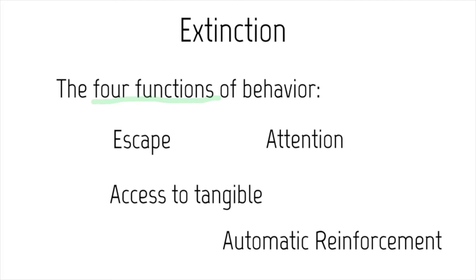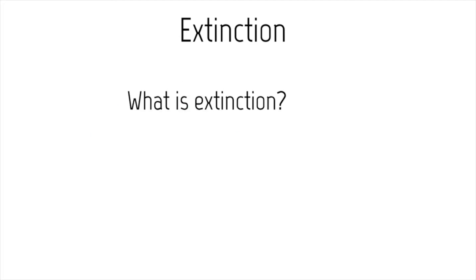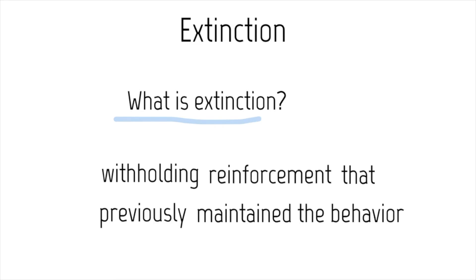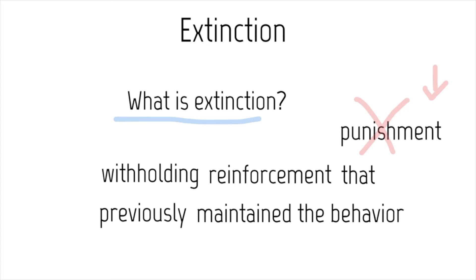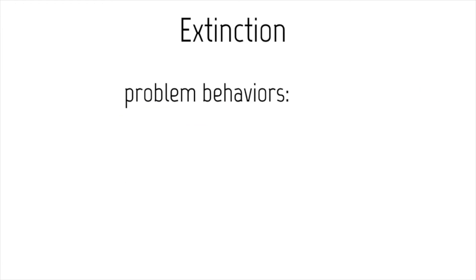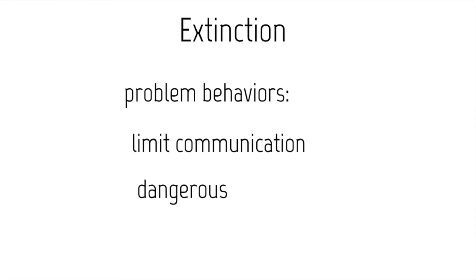With those four functions of behavior, we can look at how we would apply extinction. First, the definition: extinction is withholding reinforcement that previously maintained the behavior. It's important to note that this is different from punishment — we're not taking anything away or adding anything to decrease behaviors; we're simply never reinforcing the behavior. Extinction is used for problem behaviors that limit communication or are dangerous to themselves or others.